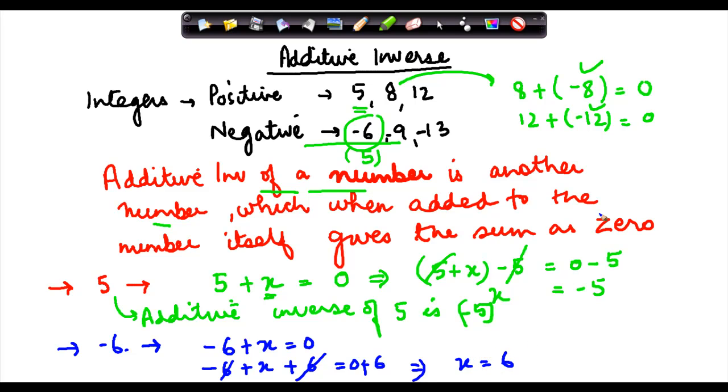Basically, in all these cases, the Additive Inverse of a number is the same number with the opposite sign. For x, the Additive Inverse is the same number but with the opposite sign. If x is positive, it will be minus x. If x is negative, the Additive Inverse will be positive x.